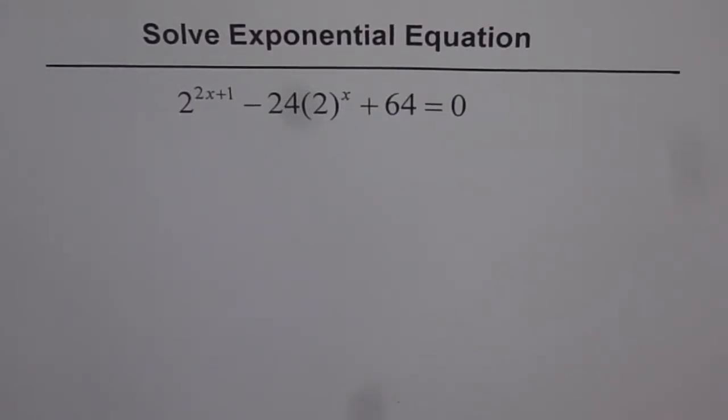Solve exponential equation. 2 to the power of 2x plus 1 minus 24 times 2 to the power of x plus 64 equals to 0.